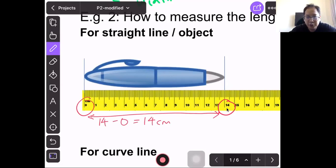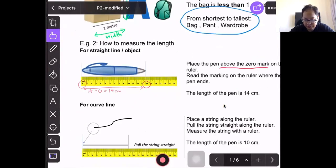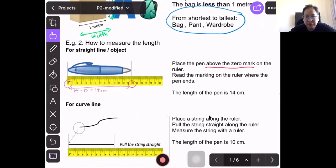Another way is to count. We start from 0, we count 1 cm, 2 cm, 3 cm, 4 cm, 5, 6, 7, 8, 9, 10, 11, 12, 13, 14. So the length of the pen is 14 cm.